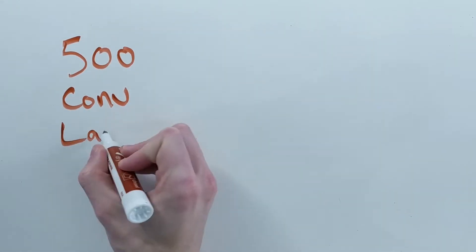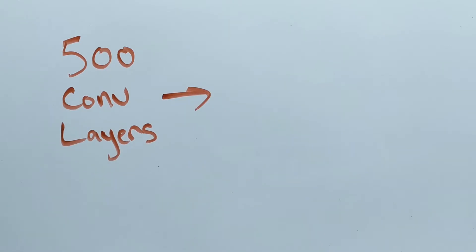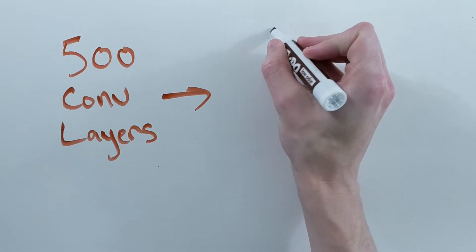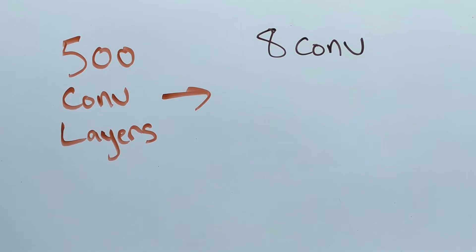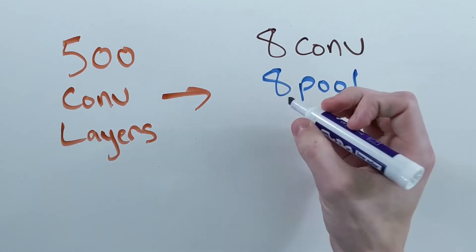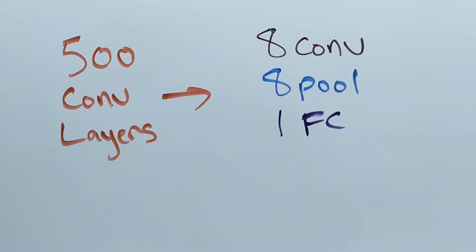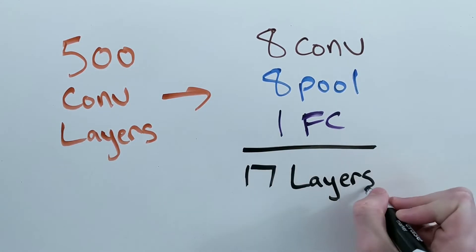Now, instead of 500 convolutional layers, it's only 17 total layers, including all the convolutions, pooling, and the fully connected layer at the end. If you just count convolutions, it's only 8 layers!